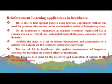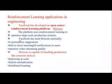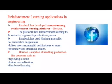Next is reinforcement learning in engineering. Facebook has developed an open source reinforcement learning platform called Horizon, which uses RL techniques to optimize large-scale production systems. It uses Horizon internally for personalized suggestions, delivering more meaningful notifications to users, and optimizing video stream quality — like the notifications and friend recommendations you see when you open Facebook.